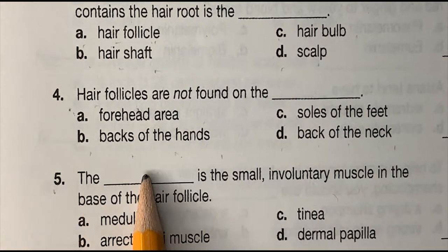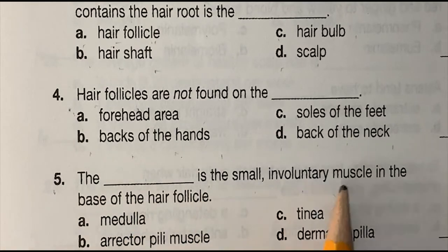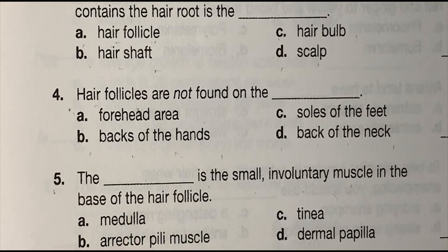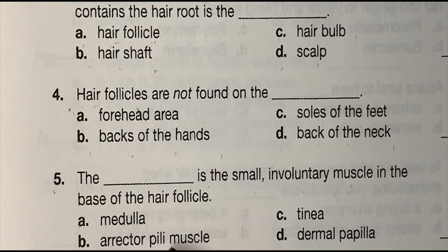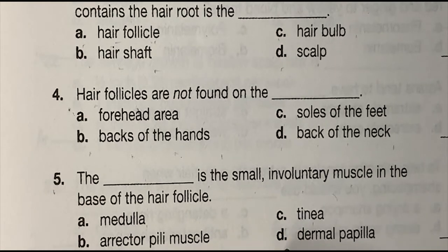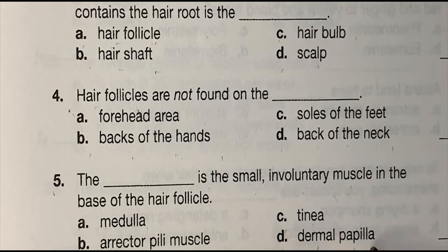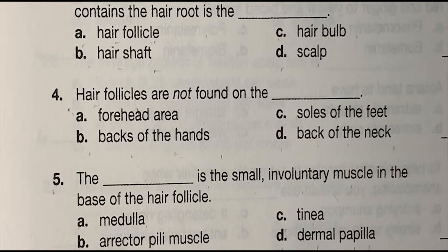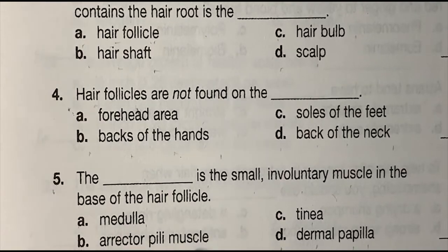Number five: the blank is the small involuntary muscle in the base of the hair follicle — (a) medulla, (b) arrector pili muscle, (c) tinea, or (d) dermal papilla. The correct answer is (b) arrector pili muscle.